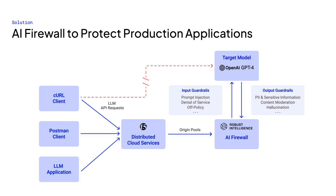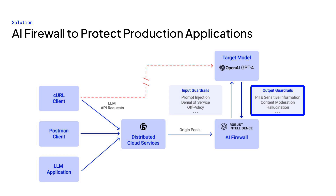AI firewall analyzes prompts sent to models for security threats like prompt injection or denial of service attacks, and also analyzes model responses to prevent undesired responses like sensitive information or toxic outputs.